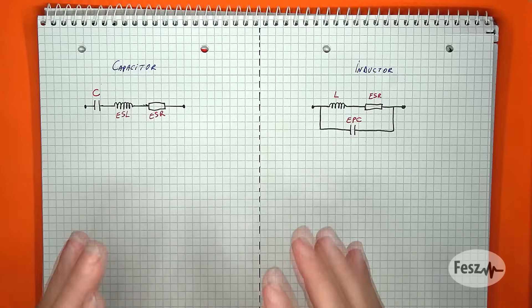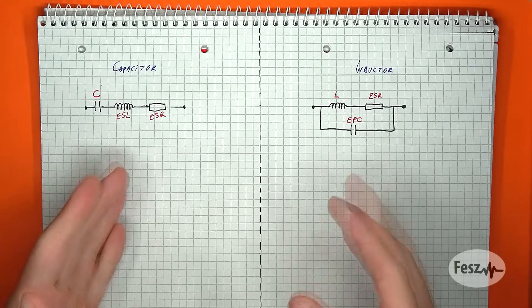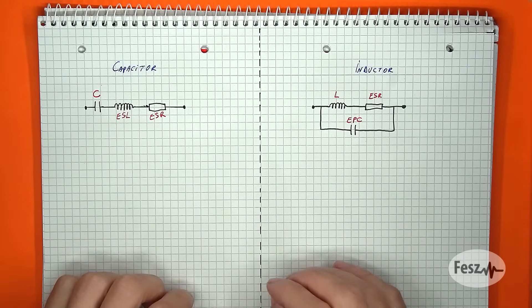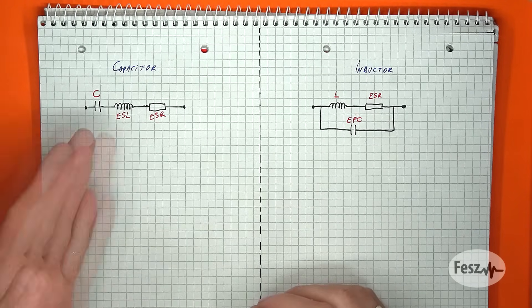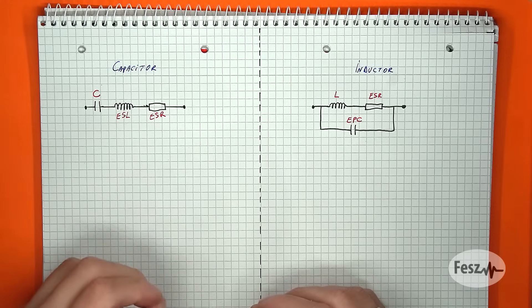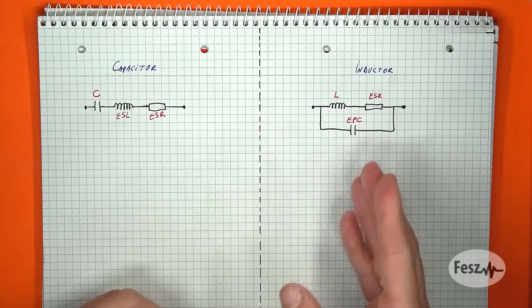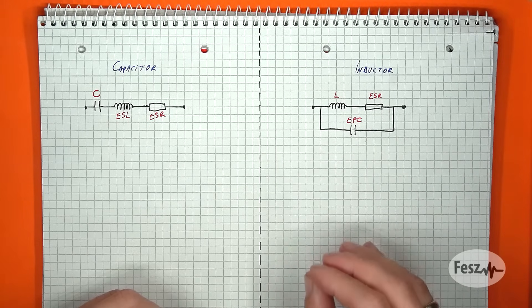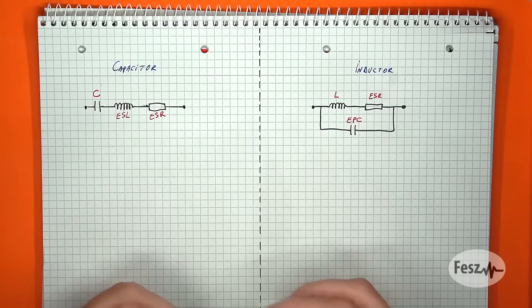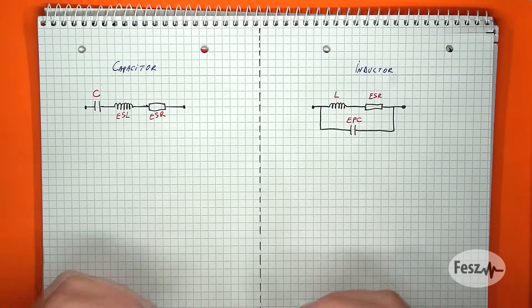So what sorts of problems do you run into with the typical capacitor and typical inductor? The first thing to look at is the conditions under which these components switch properties. The simple equivalent model of both the capacitor and inductor contains the same three basic elements: a capacitor, an inductor, and a resistor. In the case of the capacitor, these are all in series, and the inductor is called an equivalent series inductance. For the inductor, the elements are in parallel, and the capacitor is called an equivalent parallel capacitance. In both cases, the resistor is called equivalent series resistance.